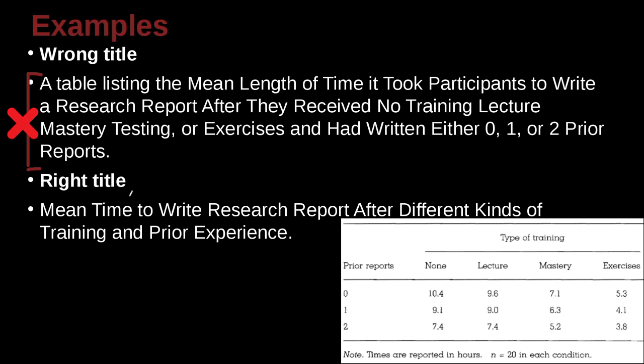What would be a better way to write that title? Mean time. Why mean? Because inside here these numbers are means. To write research report, that means what did they do? What was the task? It was to write the research report. And what was the variable that was manipulated? It looks like it was different kinds of training.